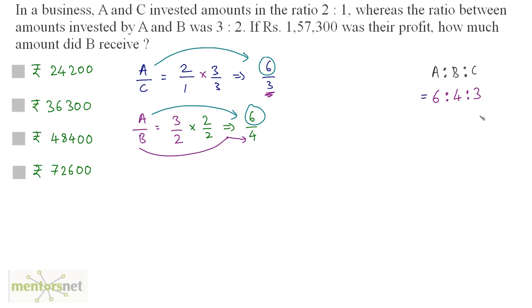We want B's share. B has received 4 parts out of, the total parts as 6 plus 4 is 10 plus 3 is 13. B's profit share is equal to 4 parts out of 13 times the total profit which is 1,57,300. This is equal to 48,400. Option C is the correct answer here.